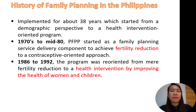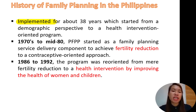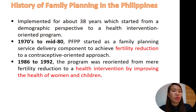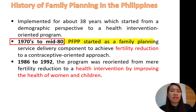When we talk about the history of family planning in the Philippines, it has been implemented for more than 38 years, which started from a demographic perspective to a health intervention orientation program. In the 1970s to mid-1980s, a family planning program started as a family planning service delivery component to achieve fertility reduction — a contraceptive-oriented approach. In 1986 through 1992, the program was reoriented from mere fertility reduction, and their goal became to use it as a health intervention by improving the health of women and children.